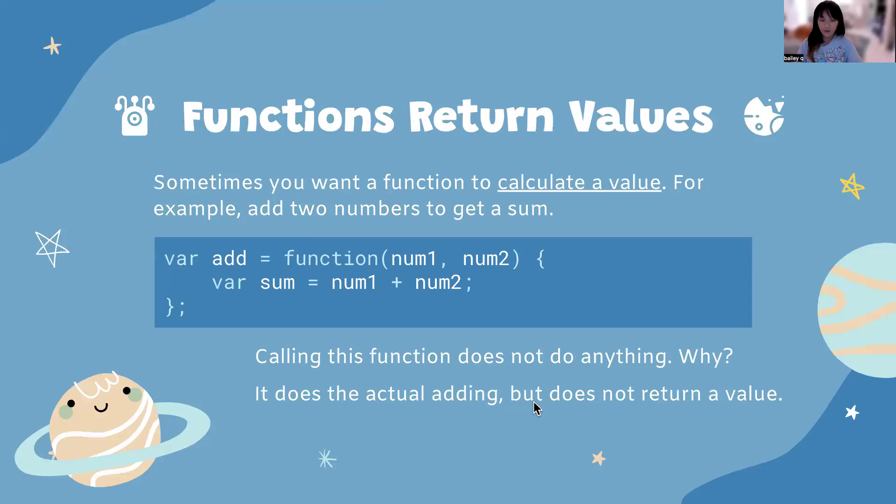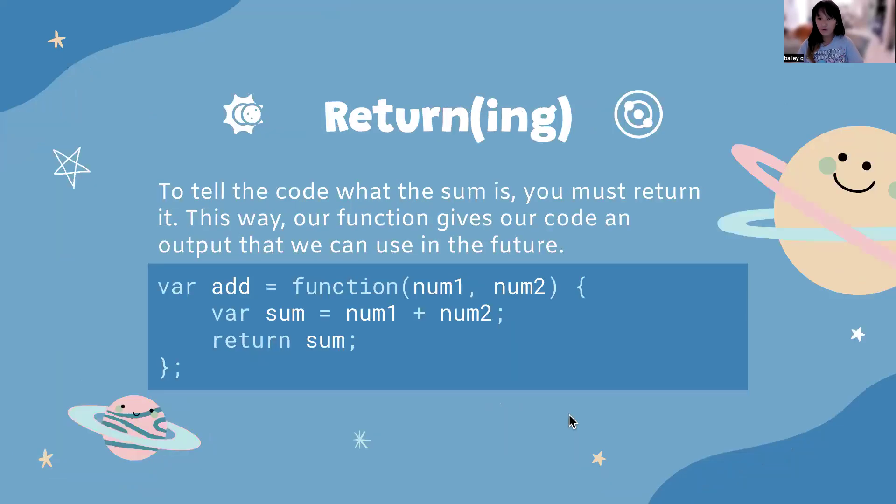Going more deeply into actually using functions within JavaScript, we're going to be learning about the return function. Sometimes you want the function to calculate a value. For example, if you recall earlier, we have a calculator project coming up. You can add two numbers to get a sum. Here, we have var add equals function num1 num2. Breaking this down, var add is the name of our function. We can add together two numbers, num1 num2. On line 2, we have var sum equals num1 plus num2. This function doesn't actually do anything because it does the adding, but it does not return a value. You must return whatever the sum is from the function. Think of it as an execution command. We have calculated using the var sum variable, but we have not actually told it to execute that command.